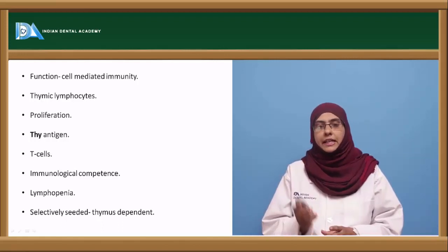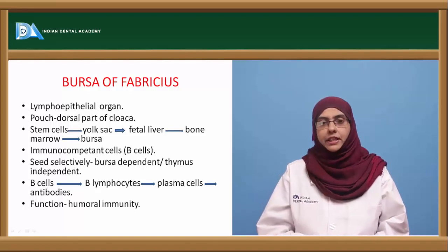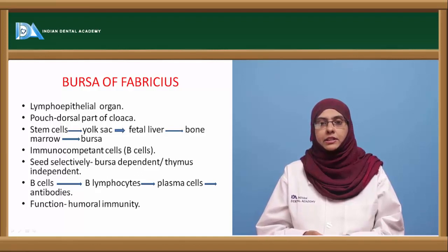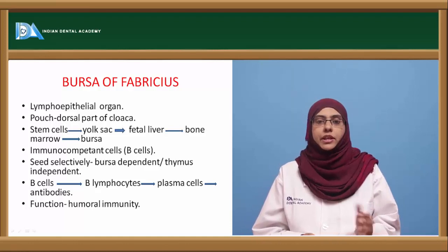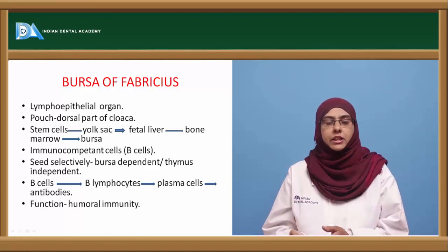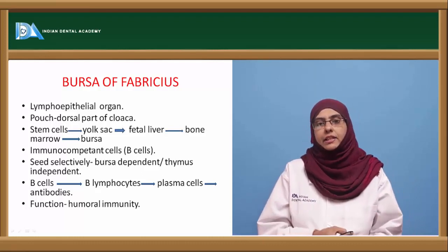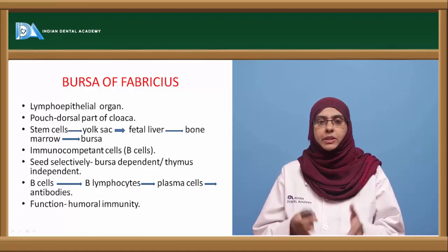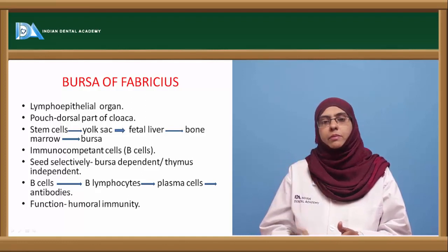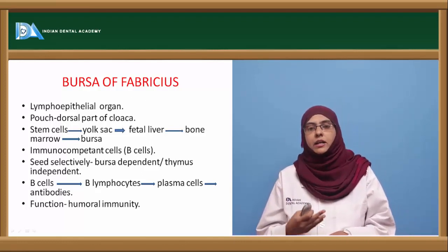The next important primary lymphoid organ is the bursa of Fabricius, first discovered in birds — a lymphoepithelial organ arising as a pouch on the dorsal part of the cloaca. Cells developed from the bursa of Fabricius are called B lymphocytes. A similar function is seen in humans in the bone marrow, so lymphocytes arising from the bone marrow are also called B lymphocytes. T lymphocytes develop in the thymus; B lymphocytes develop in the bursa of Fabricius in birds and bone marrow in humans.